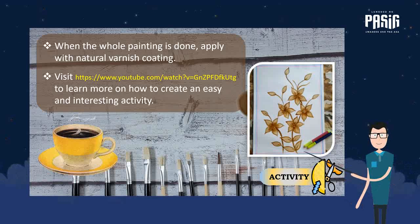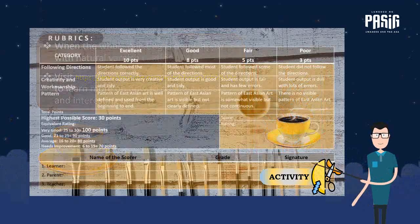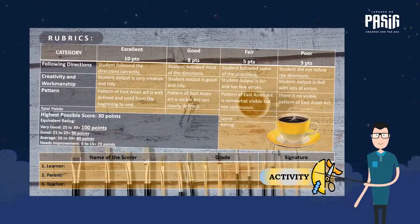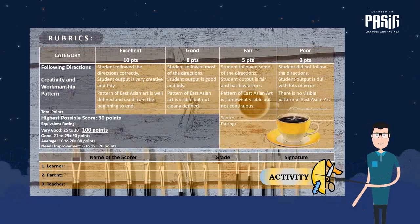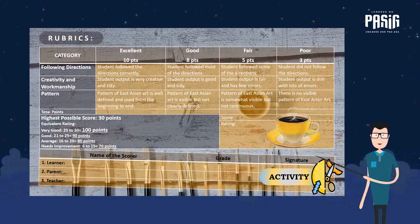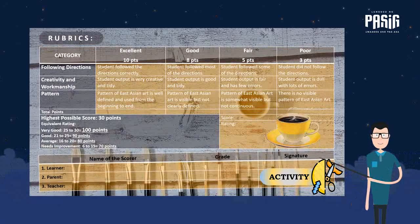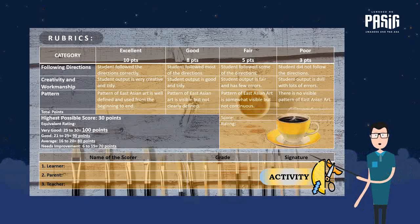Visit the provided link to learn more on how to create easy and interesting activities like this coffee painting. To check your artwork, these are the criteria or rubric to be used in assessing your work — please be guided. Assessing your activity shall come from three sources: the learner, the parent, and the teacher.